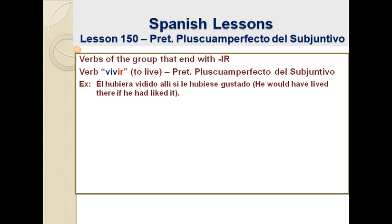Él hubiera vivido allí si le hubiese gustado. Actually, I have a typo here — it should say 'vivido,' V-I-V-I-D-O. Vivido should keep the root of the verb vivir. So, inside the if-clause — 'si le hubiese gustado' — we use the hubiese conjugation. And outside of the if-clause, when we express what would happen if the condition is met, we use the hubiera conjugation: él hubiera vivido allí.